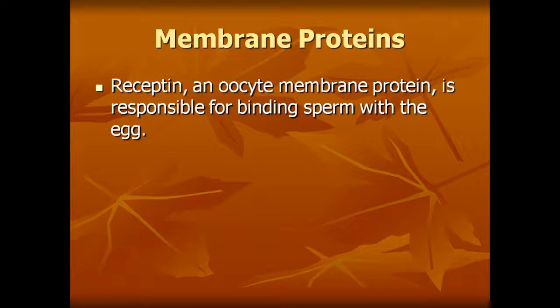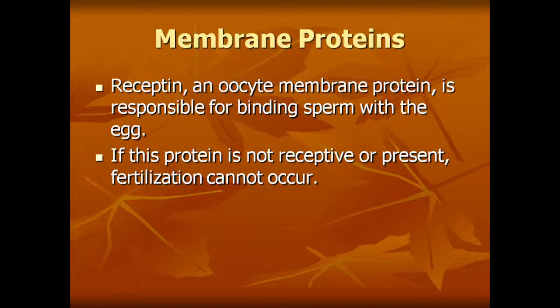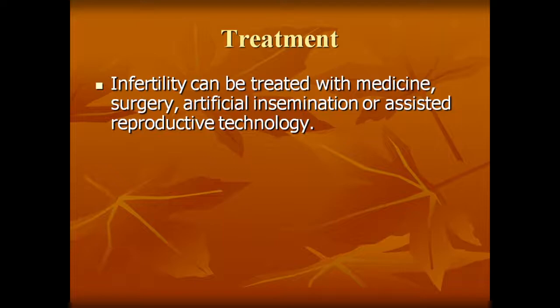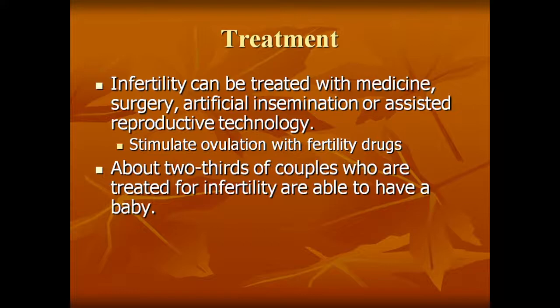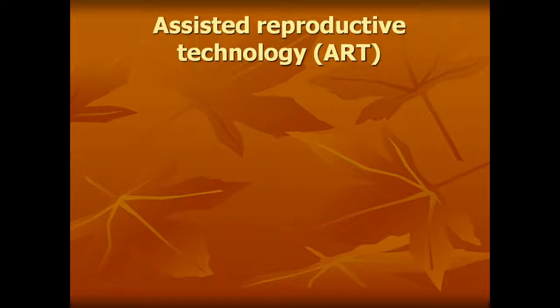Treatment of female infertility: infertility can be treated with medicine, surgery, artificial insemination, or assisted reproductive technology to stimulate ovulation with fertility drugs. About two-thirds of couples who are treated for infertility are able to have a baby. In most cases, infertility is treated with drugs or surgery.